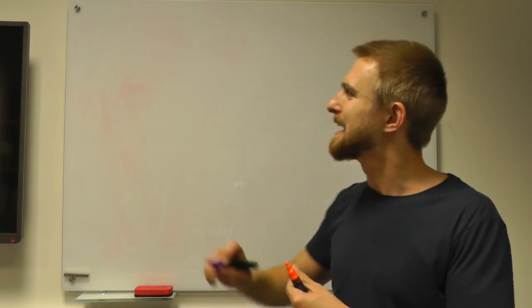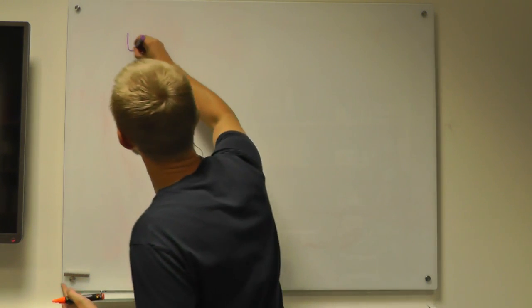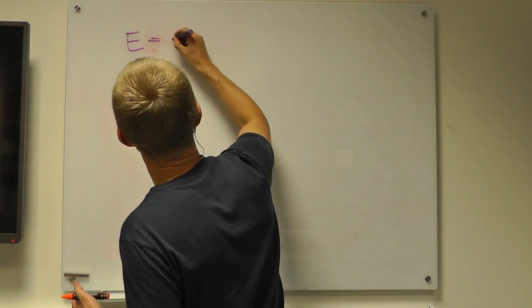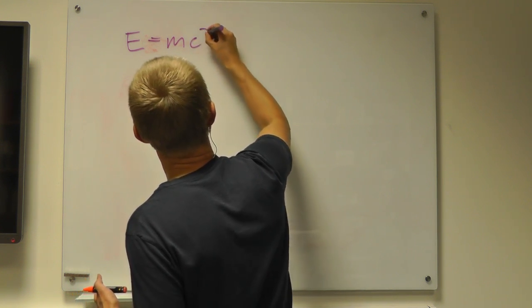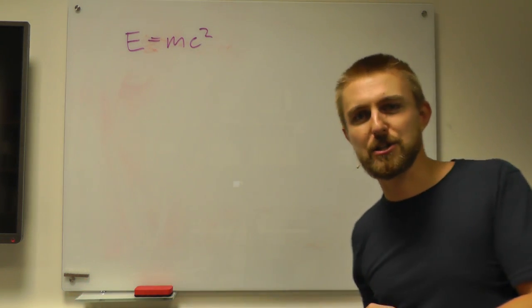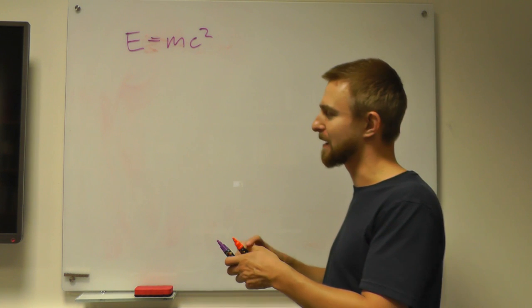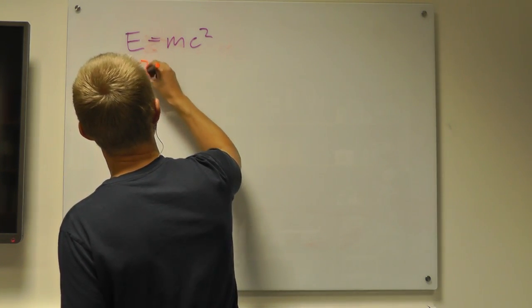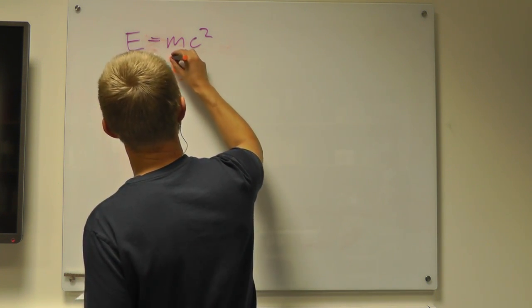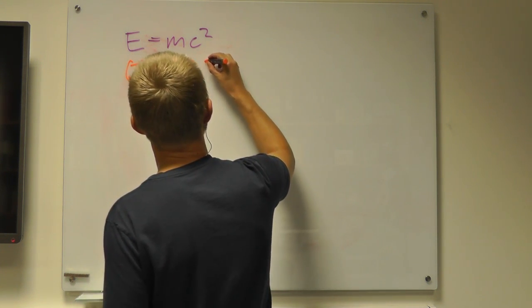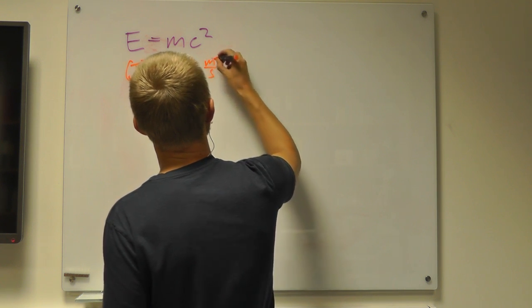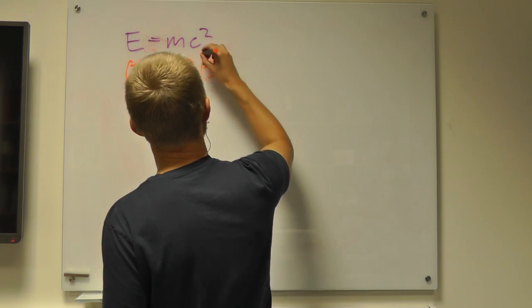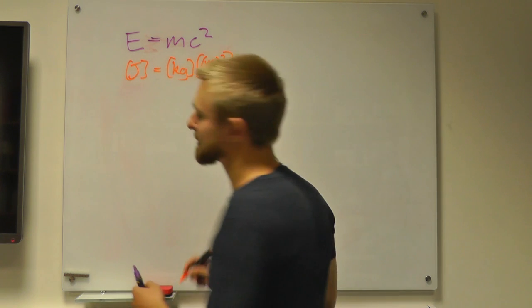So you've got an equation, if you can remember it. E equals mc squared. Energy equals mass times the speed of light squared. So what are the units of energy? Joules equals kilograms, we'll stick to SI units, times the speed of light squared. So we'll put that in brackets.